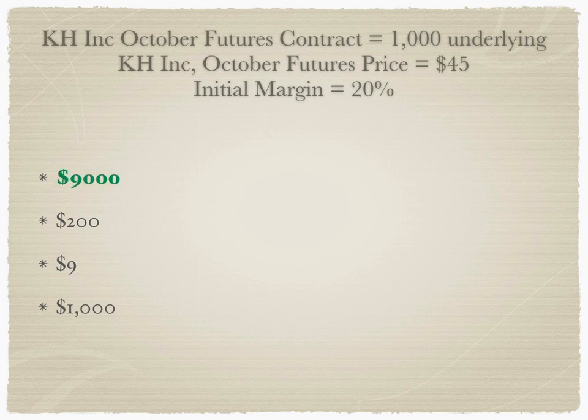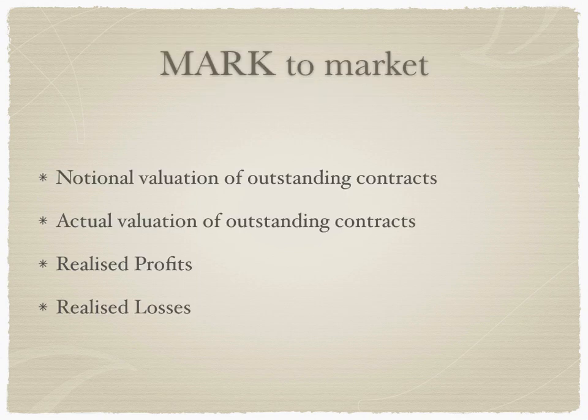The right answer is $9,000: 1,000 multiplied by $45 multiplied by 20% gives us $9,000 as the initial margin. Fourth question: mark-to-market, which is often used in futures contracts — is it a notional valuation of outstanding contracts, actual valuation of outstanding contracts, realized profit, or realized losses?